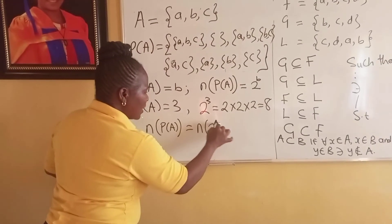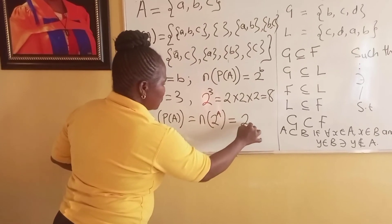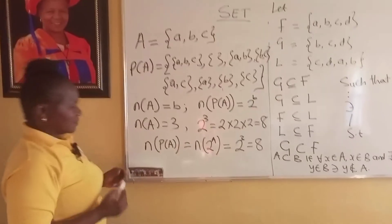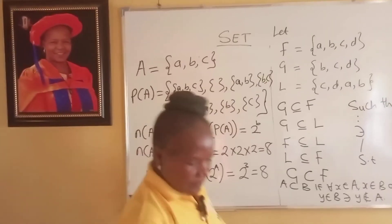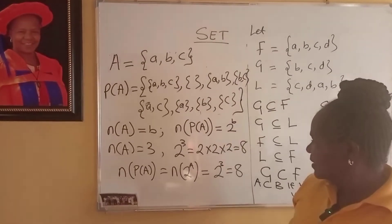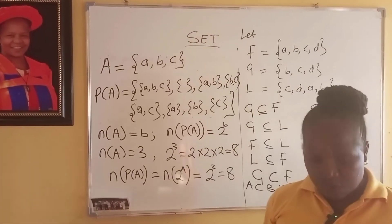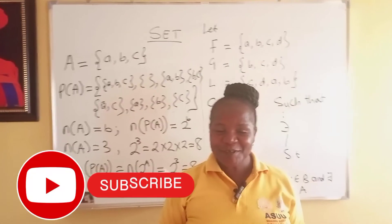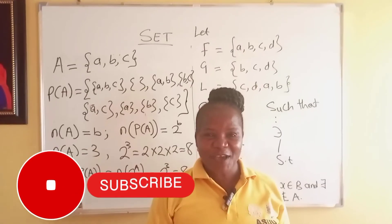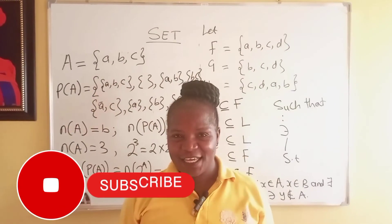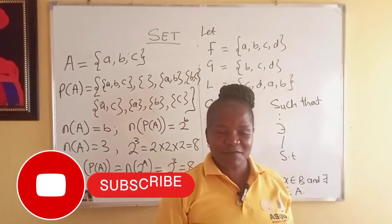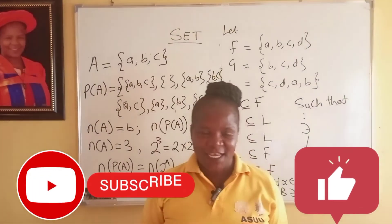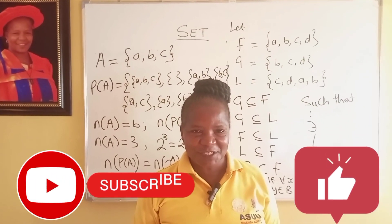The cardinality of the power set is 2^n, where n is the cardinality of the original set. Having said this, I want us to stop here. Please subscribe to this channel for a more interesting experience in mathematics. We thank God for today and hope to see you in another lesson. Thank you so much. Bye.